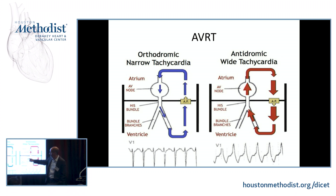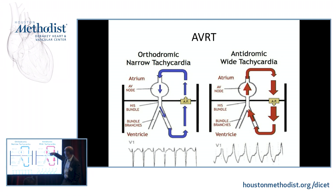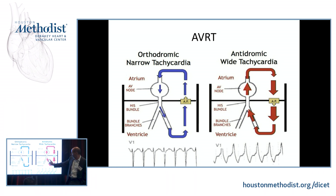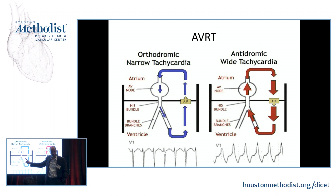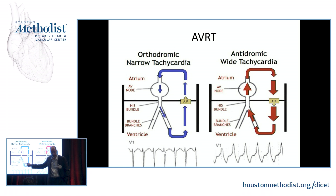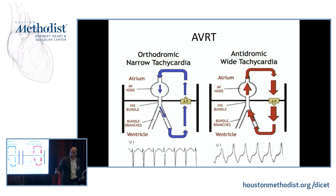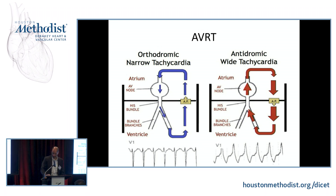So there are two types: orthodromic — going down the AV node and up the accessory pathway — and antidromic — going down the accessory pathway and up the AV node. Key concept: if the accessory pathway is on the left side, it's closer to the left bundle branch. In orthodromic tachycardia, if we block the left bundle, it will go down the right bundle and add conduction through the septum, so the tachycardia will become slower. This is an important concept.